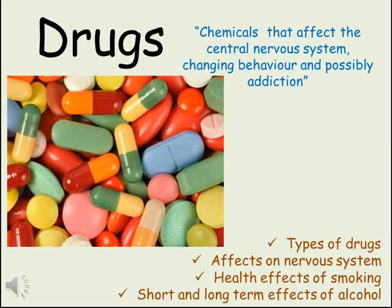The word drugs brings to mind many different images and ideas. In this context, a drug is a chemical that affects your central nervous system, causing a change in behaviour and possibly addiction. There are four types of drugs with different effects that we're going to look at in this video. We'll look at examples of each type, how they affect our nervous system and change our behaviour, before looking in more detail at the effects and possible dangers through misuse of two legal drugs: alcohol and tobacco.